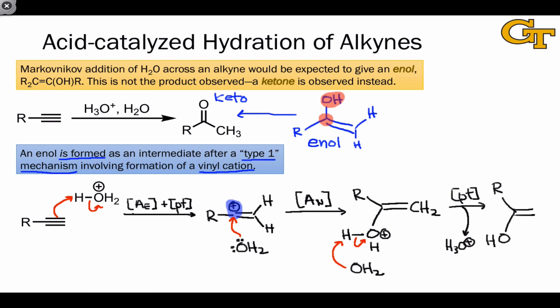The enol is unstable with respect to an isomeric molecule readily generated under these acidic reaction conditions. On the next slide, we'll see how this works and why the isomer, the keto form, is more stable than the enol form.